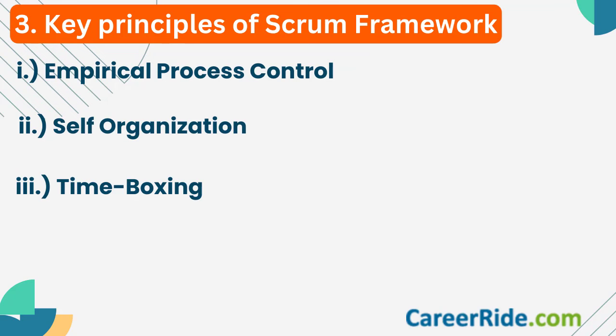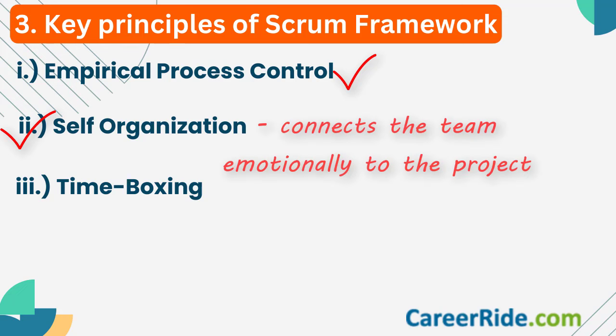Moving on to question number three: what are the key principles of the Scrum framework? The key principles around which Scrum framework centers are: number one, empirical process control — the first and most important principle comprising transparency, inspection and adaptation, as discussed in the previous question. The second one is self-organization. The thought here is to let the team take ownership and feel emotionally connected to the project, because the more a team is self-organized, the more emotionally invested it will be.